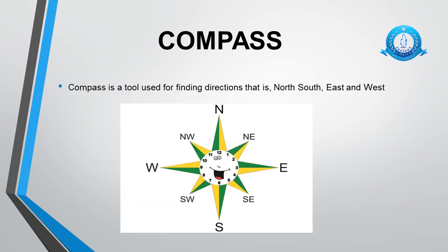First of all we will discuss compass and map of Pakistan. I know we have already discussed these in one of our previous lessons. This is going to be the reinforcement of those concepts because it is very important for you all to learn how to use a compass to find directions on a map. Now can you tell me what is a compass? A compass is a tool used for finding directions — that is north, south, east and west.